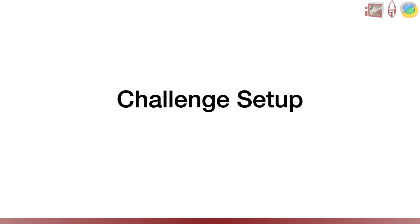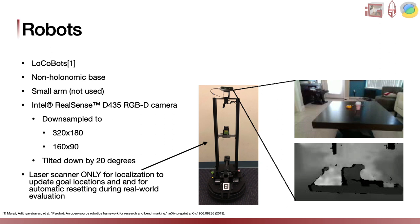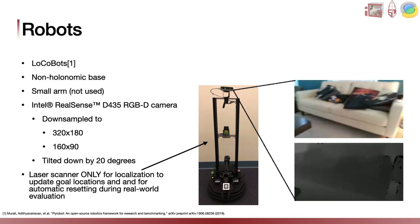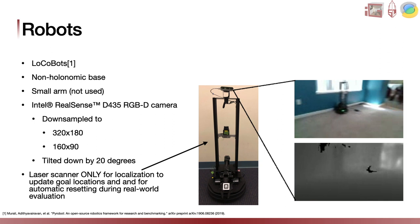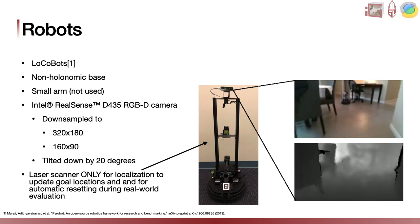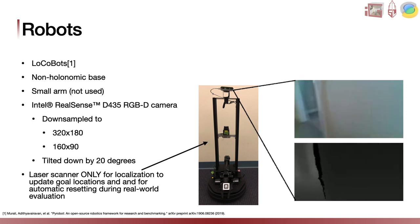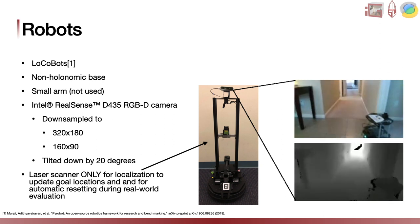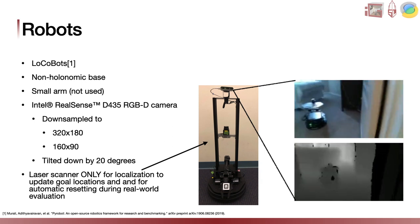My name is Cheng Shu Eric Li, one of the organizers of the challenge. I would love to give you a deep dive into our challenge setup. In this challenge, we utilize Locobots — a mobile manipulator with a non-holonomic base and a small arm in the front. On the top of the robot, we have an Intel RealSense RGBD camera that provides a constant stream of color and depth images at around 30 Hz, as shown on the right-hand side. The camera is tilted down by 20 degrees so that it can see what is immediately in front of the robot. Finally, we have a one-beam laser scanner only for localization purposes to update the goal locations and for automatic resetting during real-world evaluation.